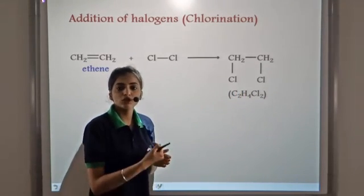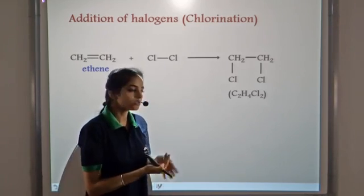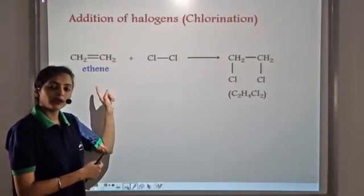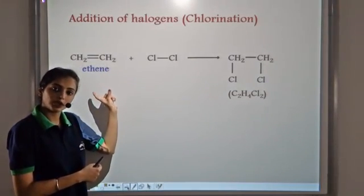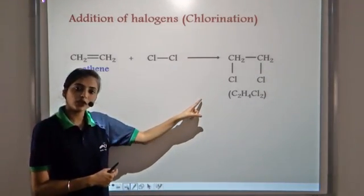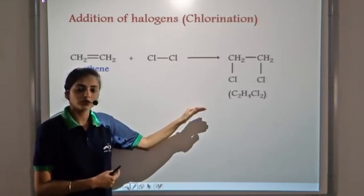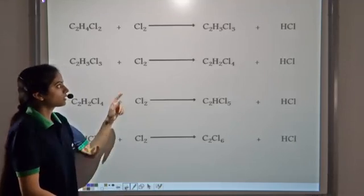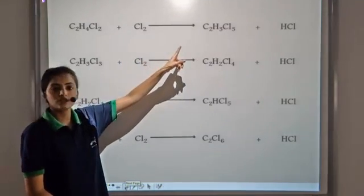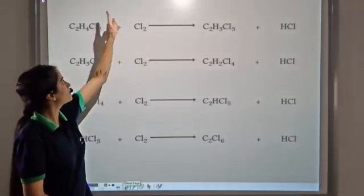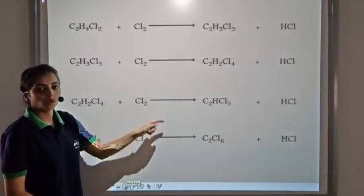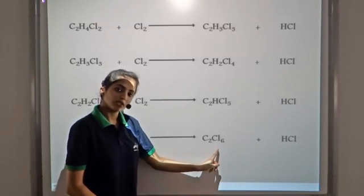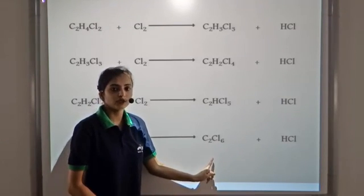Once the unsaturated hydrocarbon is converted into a saturated product, from this stage onwards we get substitution reactions. So when C2H4Cl2 reacts with chlorine, it forms C2H3Cl3 — one chlorine atom replaces one hydrogen atom — and so on, until there is no more hydrogen atom to be replaced. The final product still remains C2Cl6.